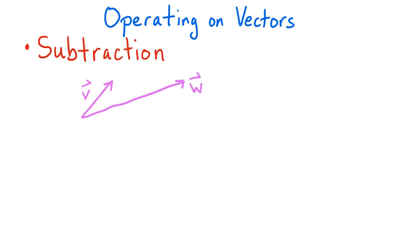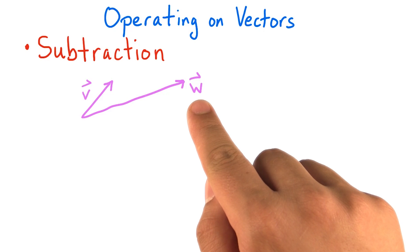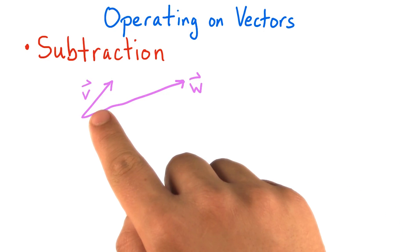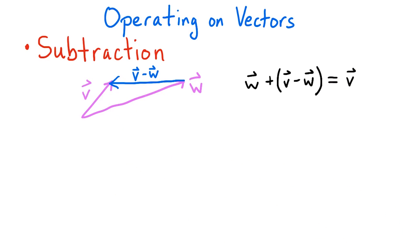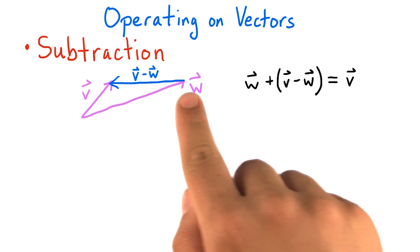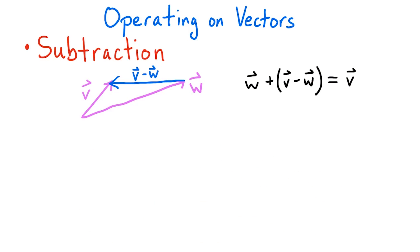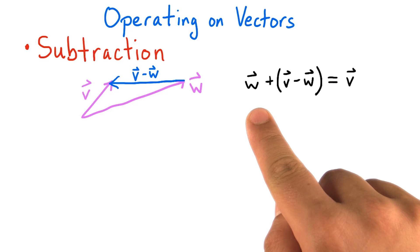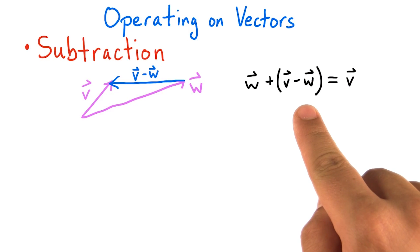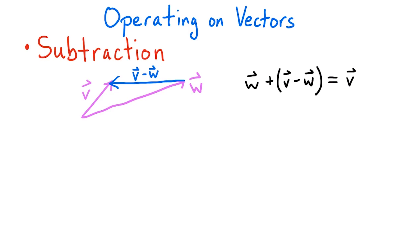What vector would we need to add to w in order for the sum to be v? We represent this geometrically by drawing an arrow from the head of w to the head of v. This vector is what we call v minus w, since w plus the vector v minus w equals v. Numerically, we can compute the difference between two vectors by subtracting their corresponding coordinates.